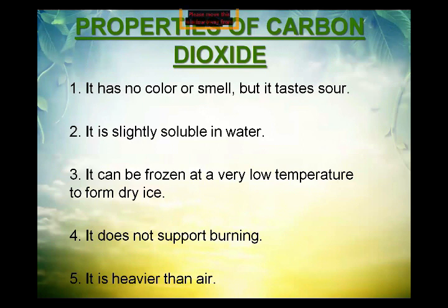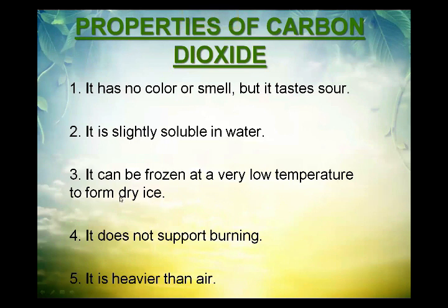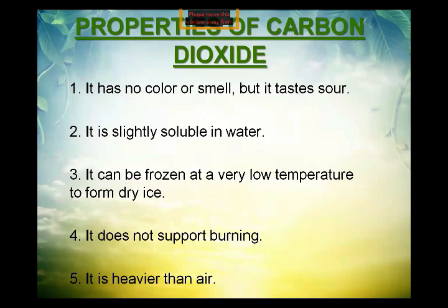Carbon dioxide does not support burning. It can also be frozen at very low temperature to form dry ice. When carbon dioxide is frozen at very low temperature it forms dry ice — solid carbon dioxide — which is white in colour and is used for cooling. When this solid dry ice is heated, it does not melt but directly converts into gas. This process is called sublimation. So dry ice directly converts on heating into gas by the process of sublimation.